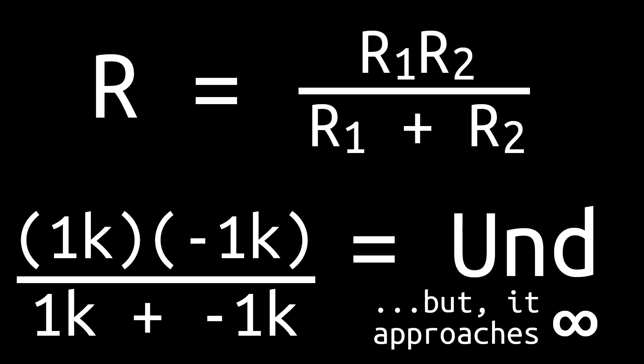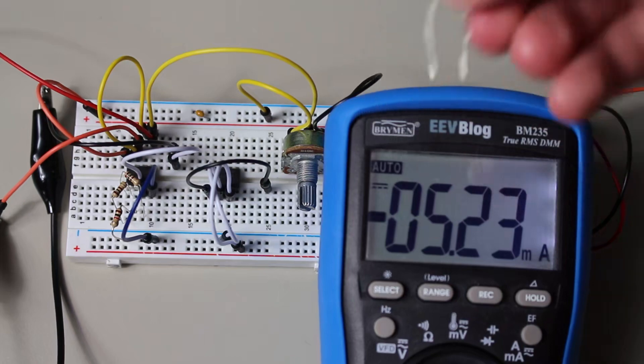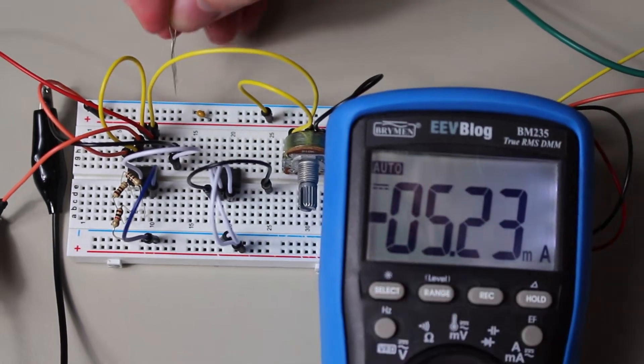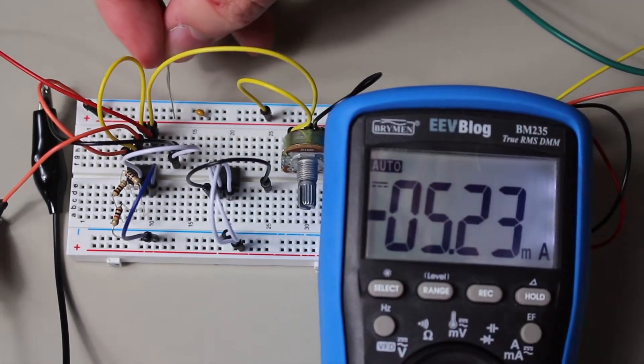And this does work in real life too, barely any current flows. This could be especially useful for when you need to essentially cancel out a resistive load on a device that can't handle it by itself.